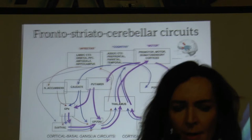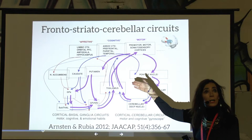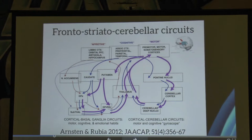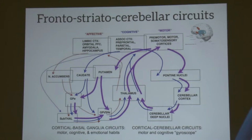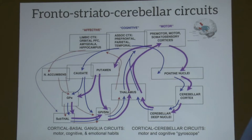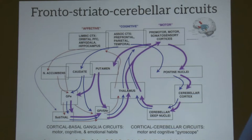Different frontal regions connect to different parts of the basal ganglia to form what we call frontal-basal ganglia networks, also called frontostriatal networks. Importantly, everyone knows the frontal lobe is the latest region to develop — but what people don't know is that the cerebellum and basal ganglia develop at the same time, and the cerebellum even later. So ADHD children have problems with areas which develop very late in life, which aligns with the theory of delayed brain maturation.